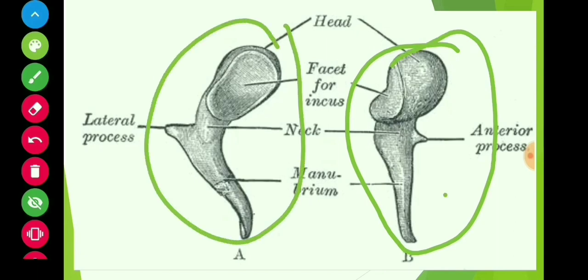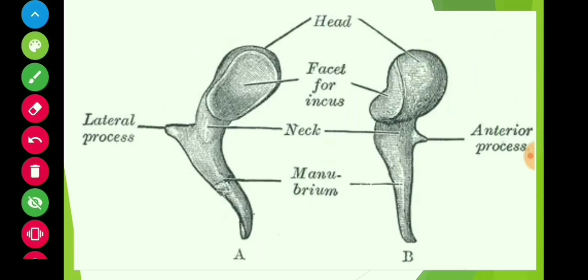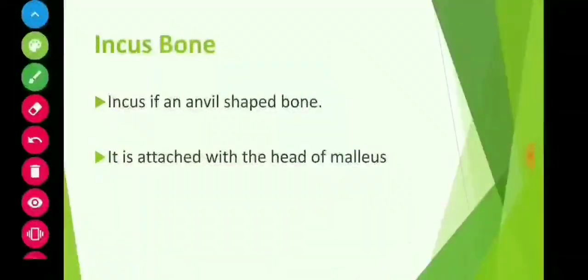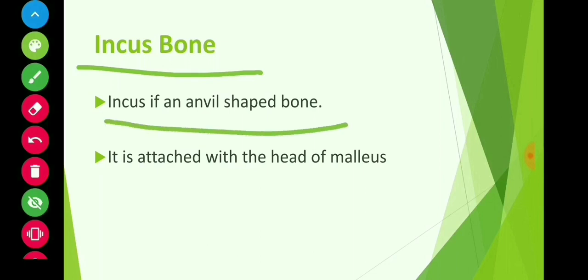Now we will discuss about the incus bone. The incus bone is an anvil-shaped bone. It is attached with the head of the malleus, which we discussed in the last picture.